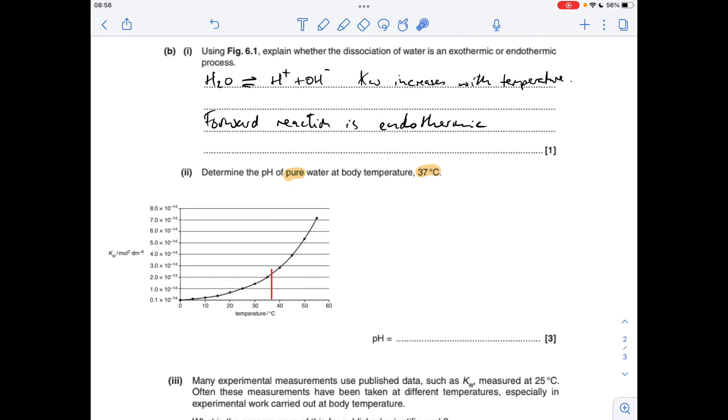Okay, so moving on to the next part, I've got to calculate the pH of pure water at body temperature. So I've just copied and pasted the graph. Yeah, it's a bit small, but hopefully you'll be able to follow this. So 37 degrees C, it's about there. So that gives me a Kw value of around 2.4 times 10 to the minus 14. Obviously, in the exam, there will be a range allowed.